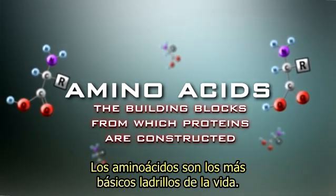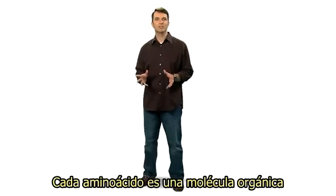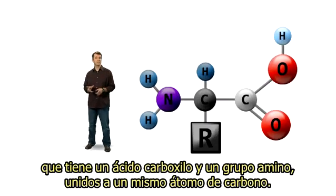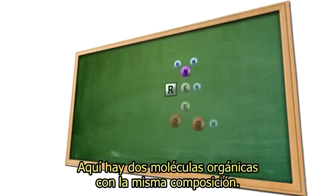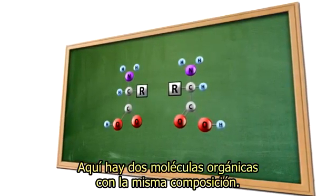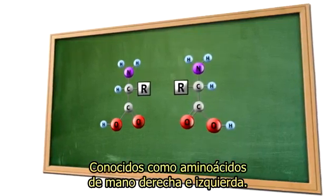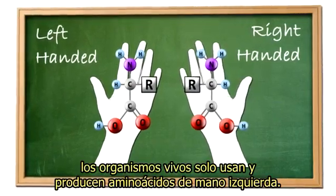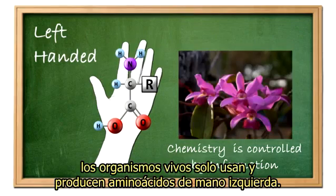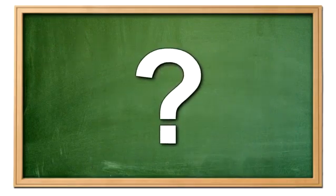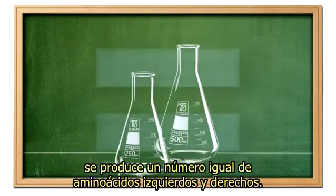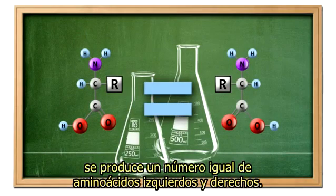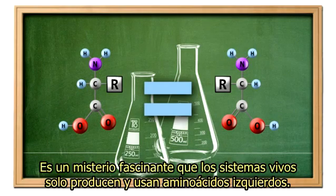Amino acids are the most basic building blocks of life. Each amino acid is an organic molecule that has a carboxylic acid and amine group attached to the same carbon atom. Here are two organic molecules that have the same composition but are mirror images of each other — known as right-handed and left-handed amino acids. Amazingly, living organisms only use and produce left-handed amino acids. Scientists have no explanations for this. When amino acids are created in a laboratory, an equal number of left-handed and right-handed amino acids are produced. It's a fascinating mystery that living systems only produce and use left-handed amino acids.